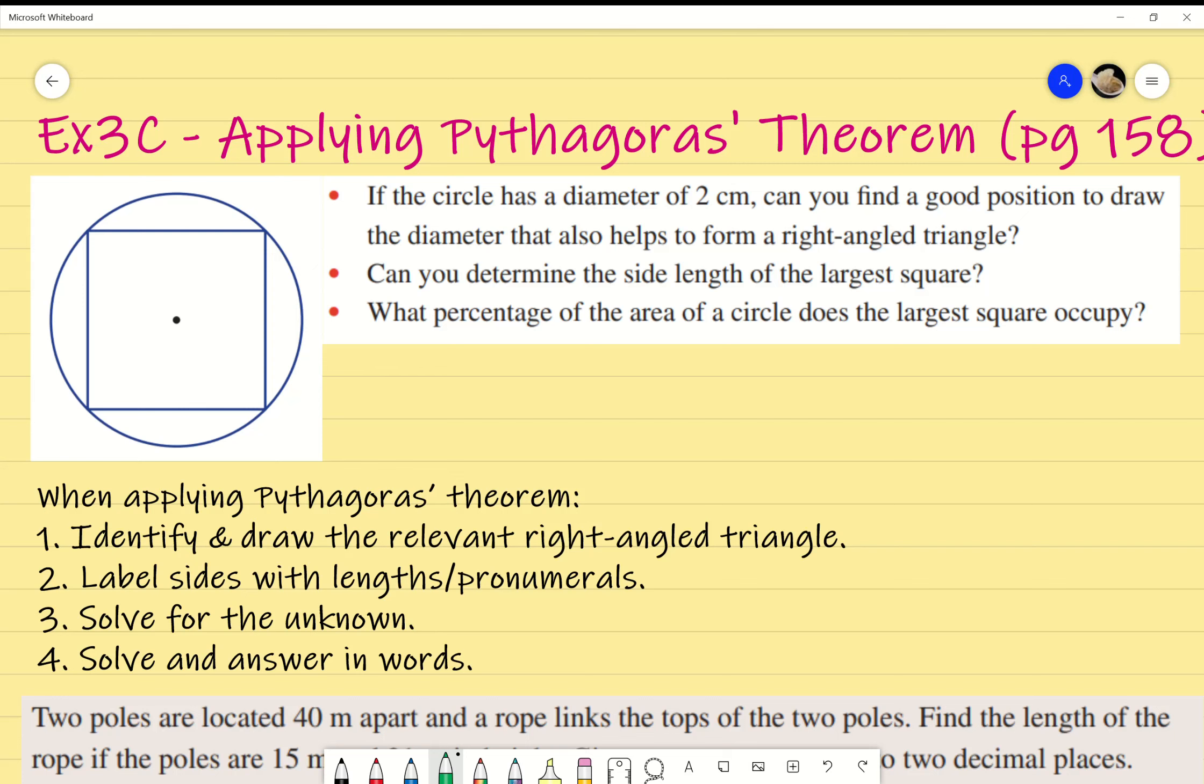If I've got a circle, of course the project doesn't look like a circle, but if I've got a circle with a diameter of two centimeters, how can we draw a line that also forms a right angle triangle? Of course the answer is that we just cut it this way. You'll see that we've got a right angle triangle on the bottom here and also on the top.